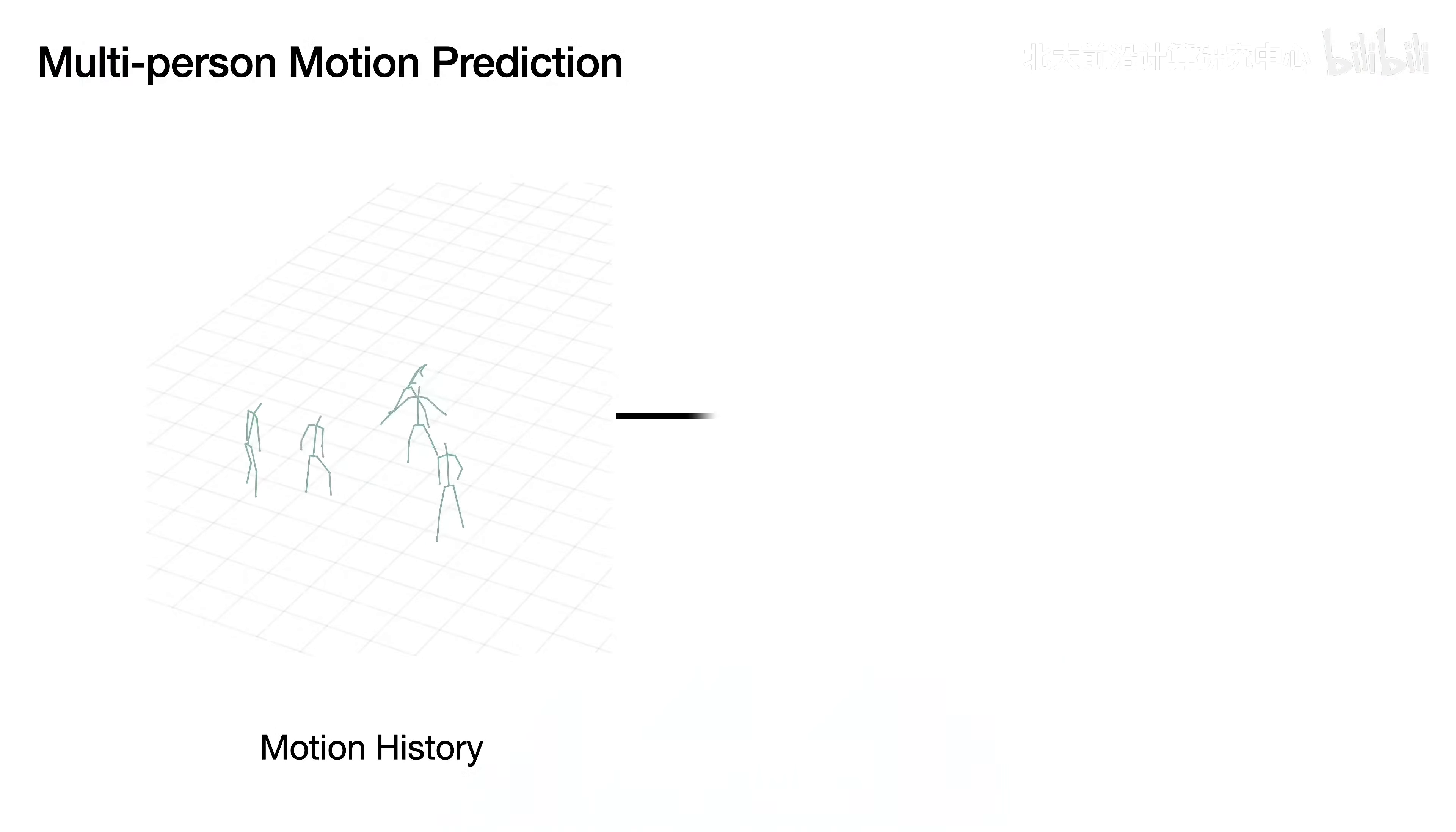Given past motions of a group of interacting people, the multiperson motion prediction problem aims to predict their collective future motion.